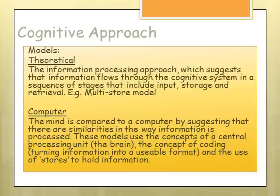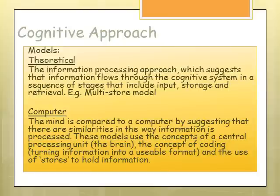There are two types of models to be aware of. Theoretical models: the information processing approach says that information flows through a system in stages — input, storage, and retrieval. Think of the multi-store model with sensory store, short-term store, and long-term store. The computer model compares the mind to a computer, suggesting similarities in the way information is processed — the brain is referred to as a central processing unit, with coding and stores to hold information.